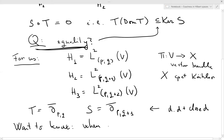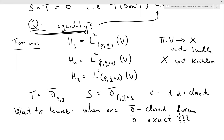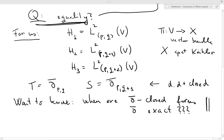So if you place this example into the context of this question, we want to know: when are del-bar closed forms del-bar exact? Not always — you always need some conditions. The result I will show today gives an abstract theorem whose conditions, if verified, answer this question pretty much always when that condition is satisfied.